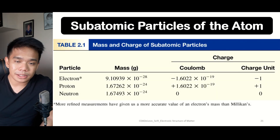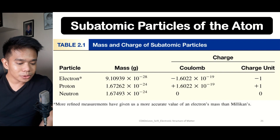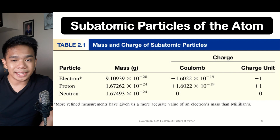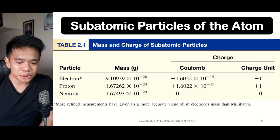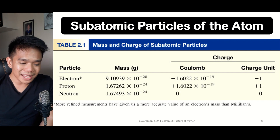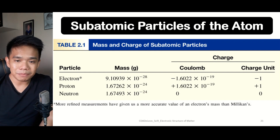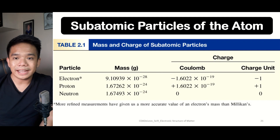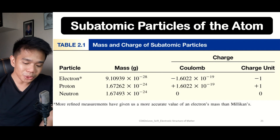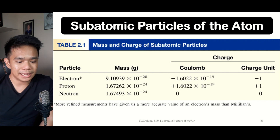As seen in the table, protons and neutrons have the same mass since they are both found within the nucleus. With regards to electrical charge measured in coulombs, both electrons and protons have the same magnitude — approximately 1.6 × 10⁻¹⁹ coulombs — however they differ in unit charge: electrons are negatively charged while protons are positively charged.